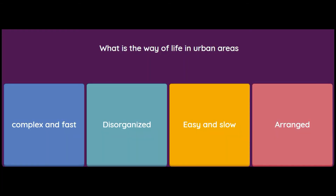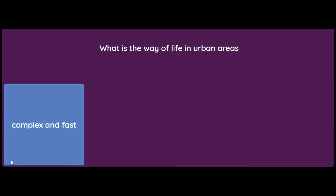What is the way of life in urban areas? Complex and fast, disorganized, easy and slow, or arranged? According to the book, life in urban areas is complex and fast, whereas in rural areas it is easy and slow. So the answer is complex and fast.